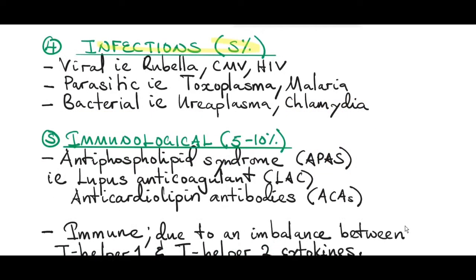Infections account for about 5% of all pregnancies causing miscarriage. Infections can cross the placenta and reach the fetus. They can be viral like rubella, cytomegalovirus, and HIV; parasitic like toxoplasma and malaria; or bacterial causes like ureaplasma and chlamydia.